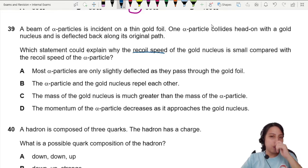Comparing recoil speed of gold nucleus, comparing with recoil speed of alpha particle. This is like a collision but on a nuclear scale.